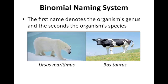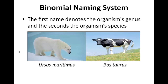Let's look at a few examples. The binomial name for a polar bear is Ursus maritimus, and the binomial name for a cow is Bos taurus. With the polar bear, Ursus denotes the organism's genus, and maritimus denotes the organism's species. In the case of the cow, Bos is the genus, and taurus is the species.